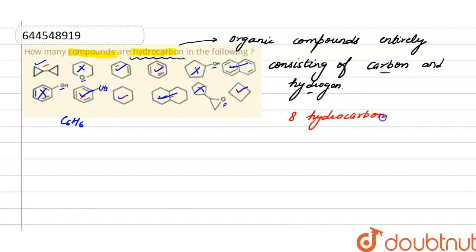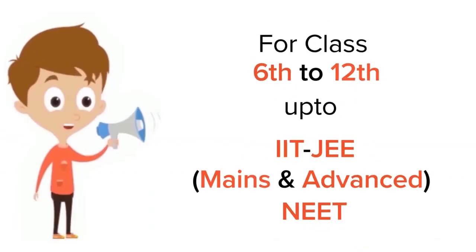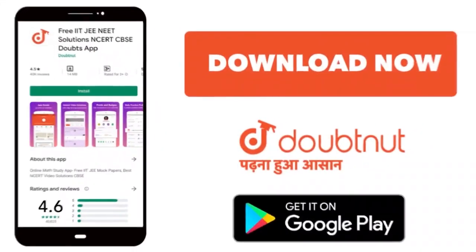Total eight hydrocarbons are present. For class 6-12, IIT-JEE and NEET level, trusted by more than five crore students. Download Doubtnet today.